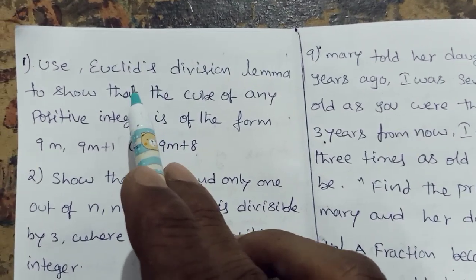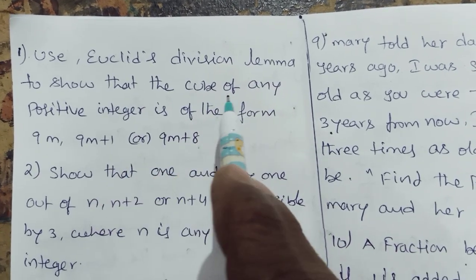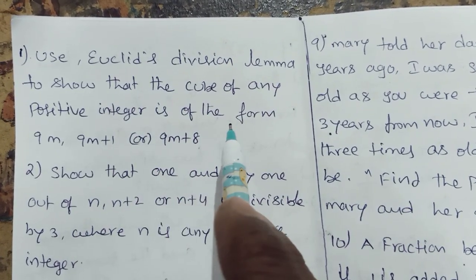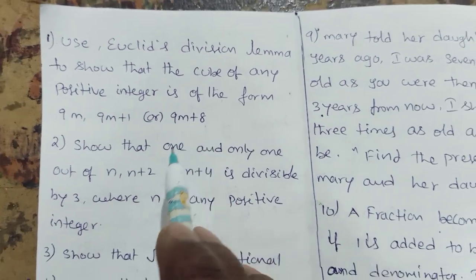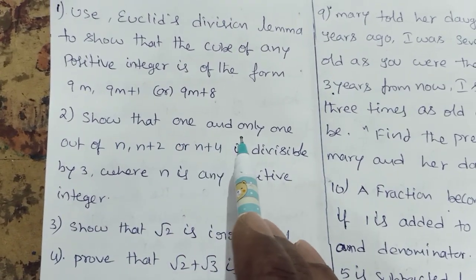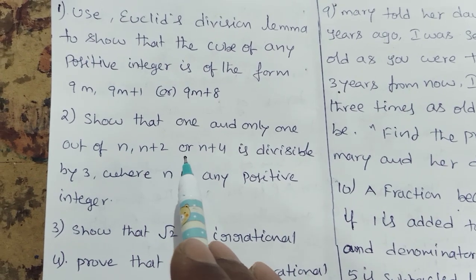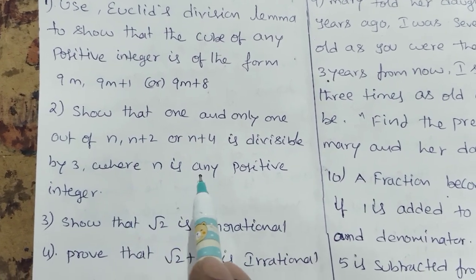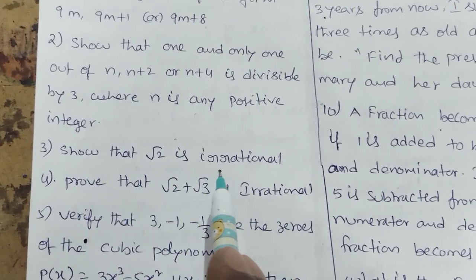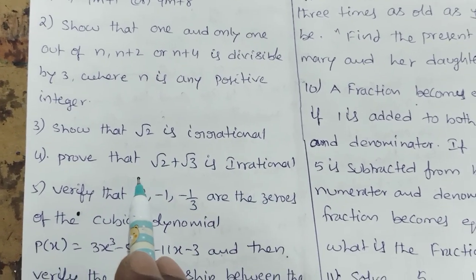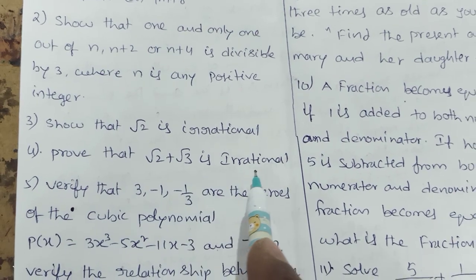Real numbers. Use Euclid's division lemma to show that cube of any positive integer is of the form 9m, 9m plus 1, or 9m plus 8. Show that one and only one out of n, n plus 2, or n plus 4 is divisible by 3 where n is any positive integer. Show that root 2 is irrational. Prove that root 2 plus root 3 is irrational.